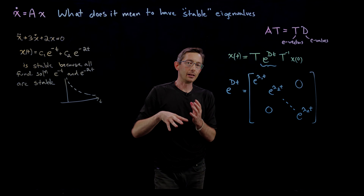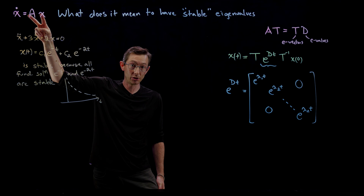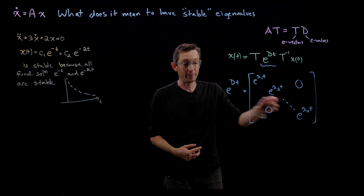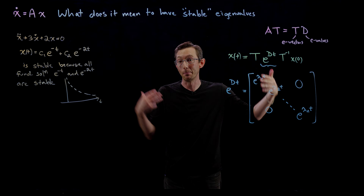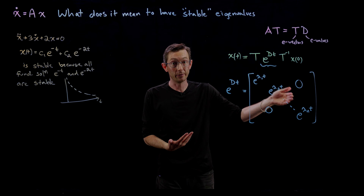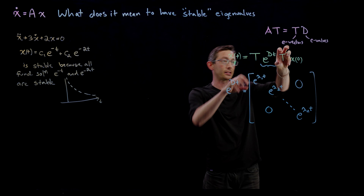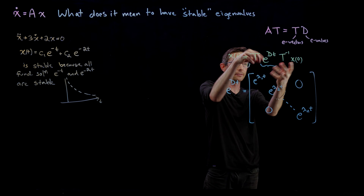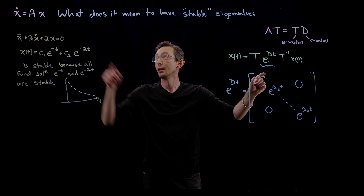Here's what I mean for an eigenvalue to be stable. For the matrix system x-dot equals Ax to be stable, every single term in this diagonal matrix e to the Dt has to be stable — all of these have to remain bounded and decay to zero as t goes to infinity. Because we're taking combinations via T and T-inverse, if even a single one of these terms is unstable, then my system is unstable.